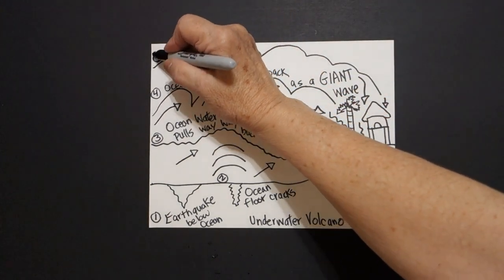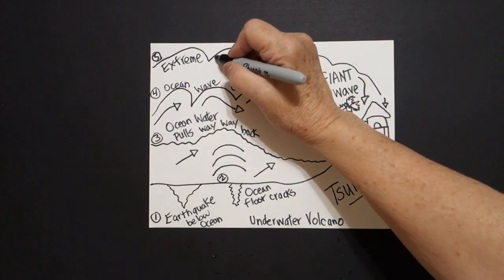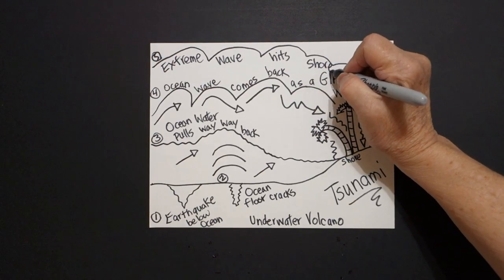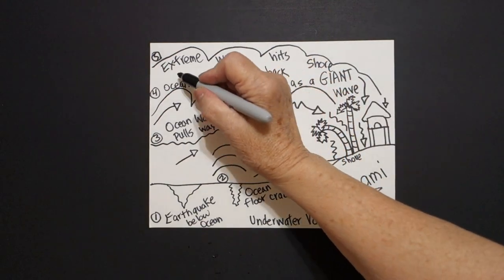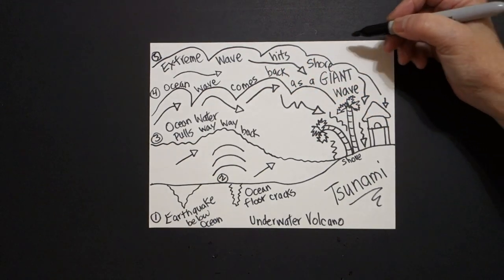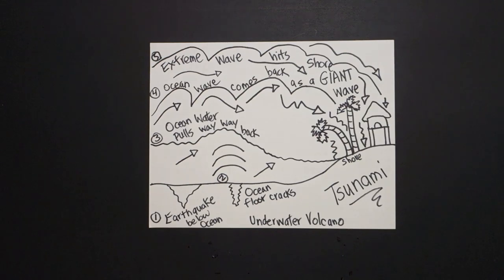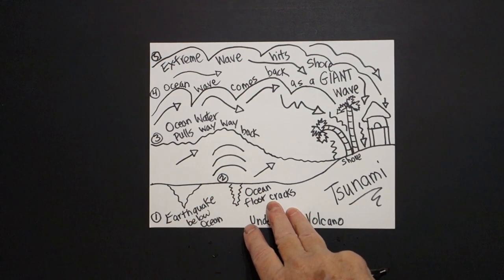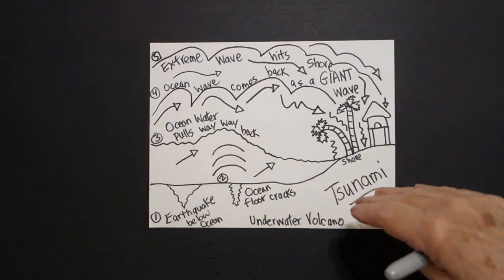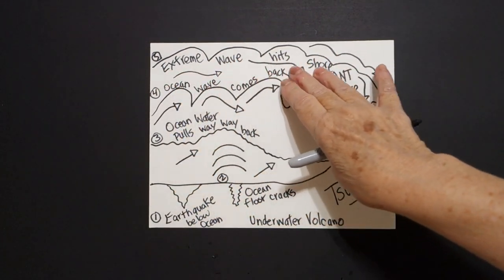Number five: the tsunami is an extreme wave that hits the shore. And in between here, I'm going to put wavy line, triangle, wavy line, triangle. So you can see up above, wavy line, triangle — hits hard. So you start down here with the earthquake, then the ocean floor cracks, releases all this energy, the ocean water pulls way back from the shore, then it comes back as a giant wave, and the extreme wave hits the shore.